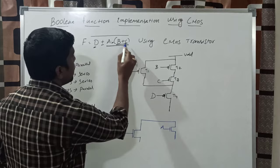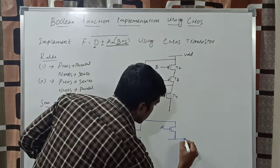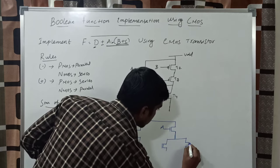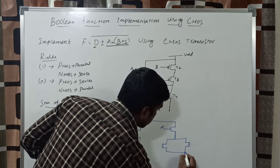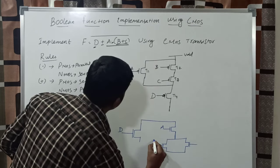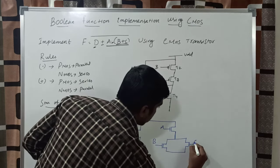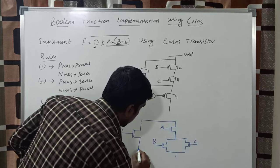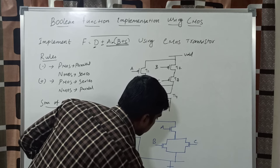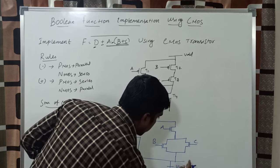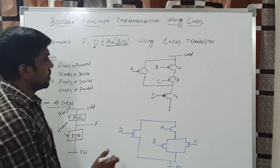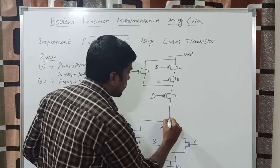Then B plus C: the two transistors are connected in parallel because the function is plus. Plus represents NMOS connecting in parallel for B and C. These two transistors are connected in parallel down to VSS. This is the basic structure of the NMOS pull-down network.